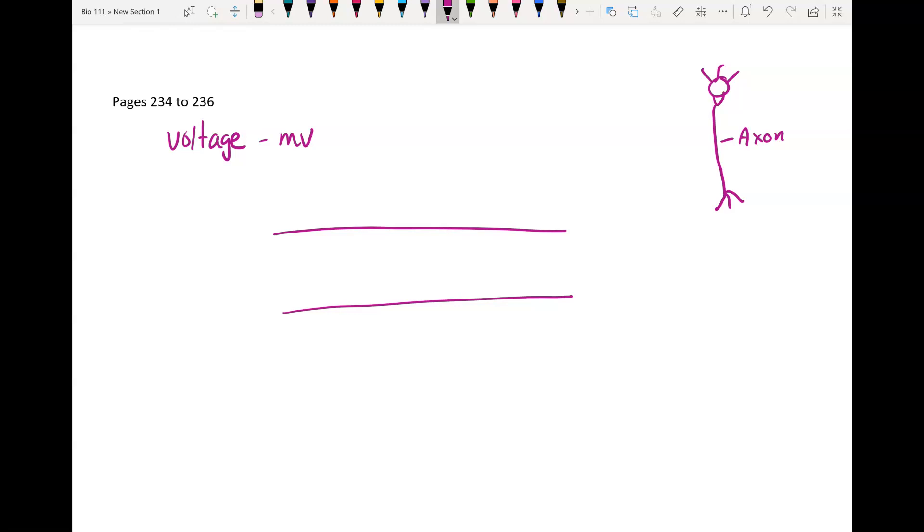So the axon has ions and remember you've already learned about ions. An ion is a charged particle. You have positive ions, also called cations inside. You also have cations outside. You're always comparing how many there are inside to how many there are outside.